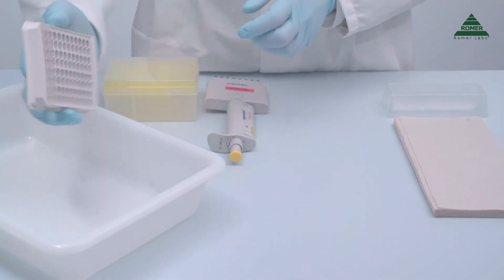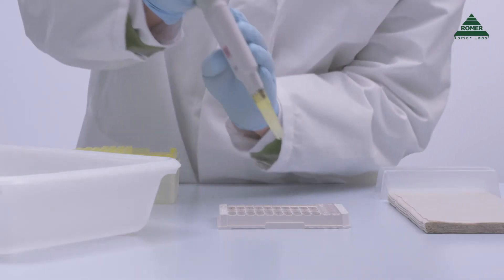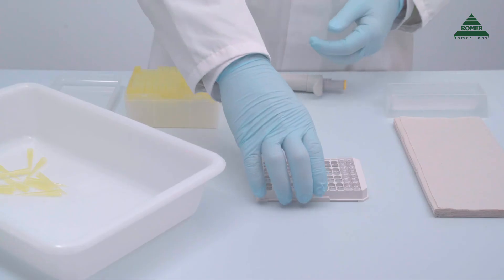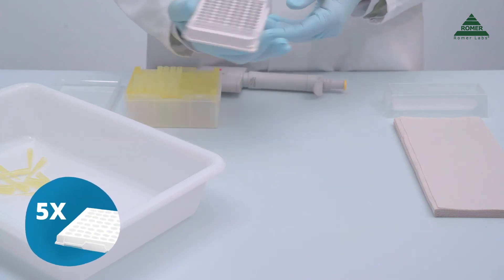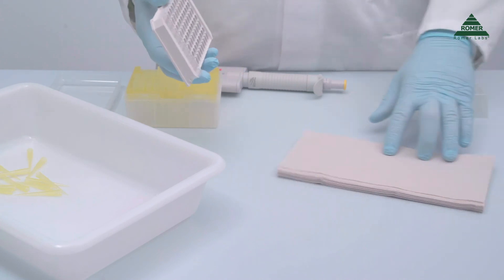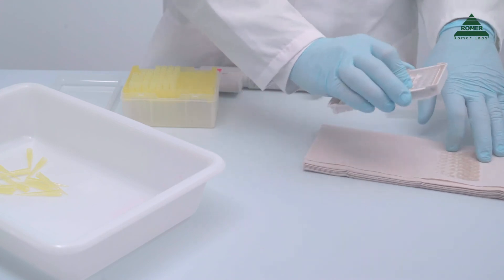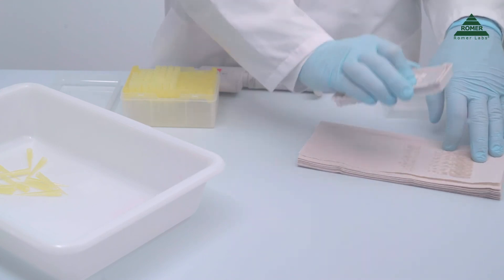Empty the content of the microwell strips into a waste container. Fill each microwell with wash buffer and then discard it again. Repeat this step 4 times for a total of 5 washes. After the 5th wash, lay several layers of absorbent paper towels on a flat surface and tap the microwell strips on top of them to remove any residual buffer.